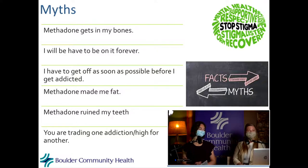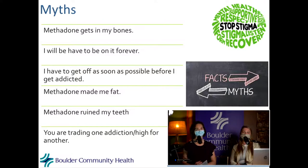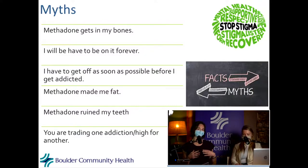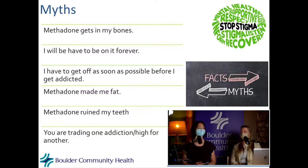Can you explain the difference between mono-buprenorphine and Suboxone? Suboxone is a combination drug — it's buprenorphine plus naloxone. The naloxone component is added to prevent overdose and reduce the potential for abuse, so people can't really misuse it in the same way as buprenorphine alone.